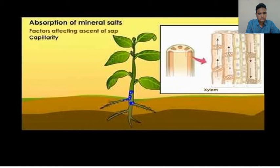The upward movement of water and minerals from the roots towards the top of the plant is known as ascent of sap. Factors affecting ascent of sap — root pressure: root pressure is the force developed in the xylem of the root that can push the sap to a certain height.